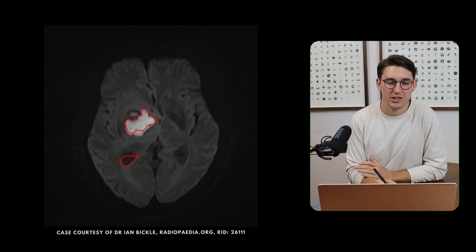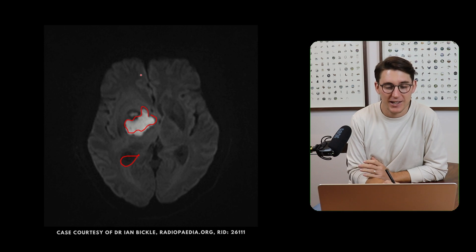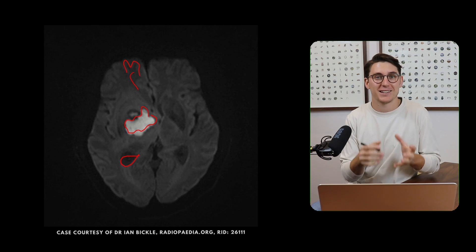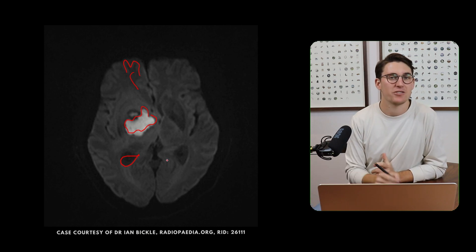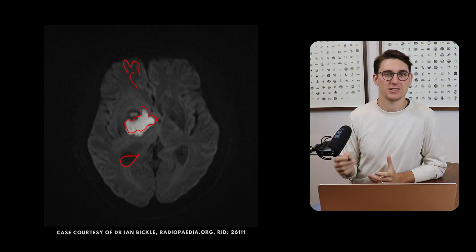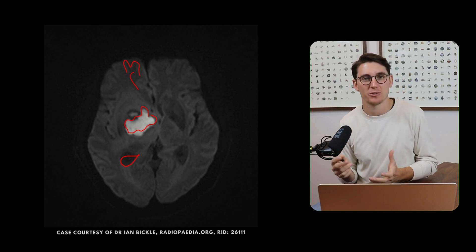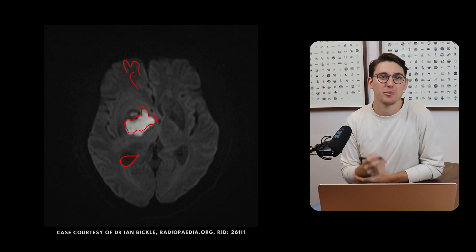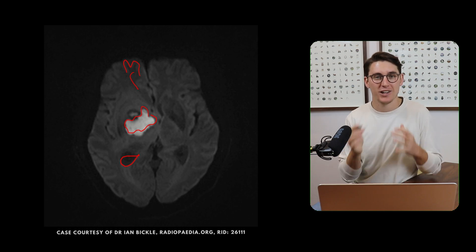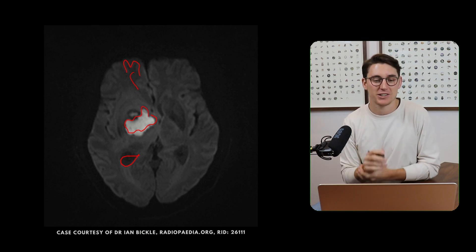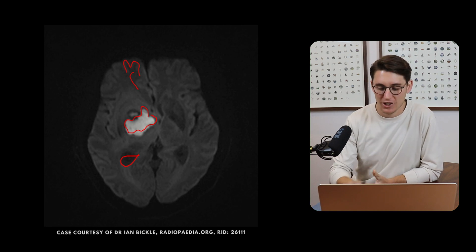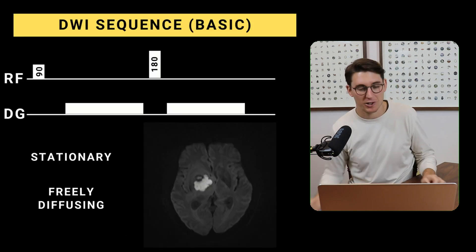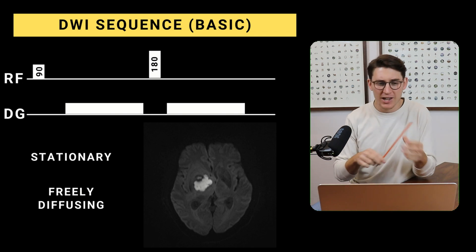Looking at this image, we can see that grey matter is actually lighter than white matter, which means this is a T2-weighted image. So why is the CSF dark in this image? If you can't answer that, it's worthwhile stepping into the physics and really understanding how we acquire these images.